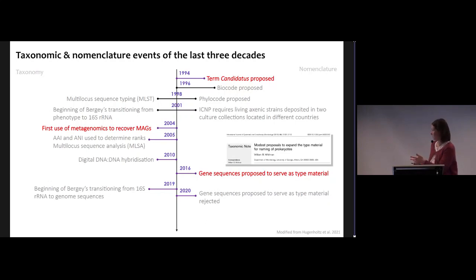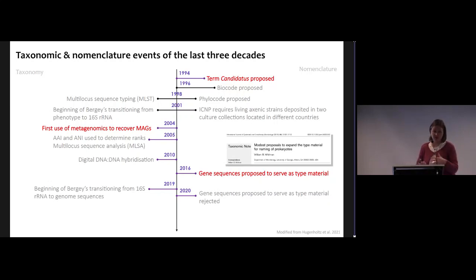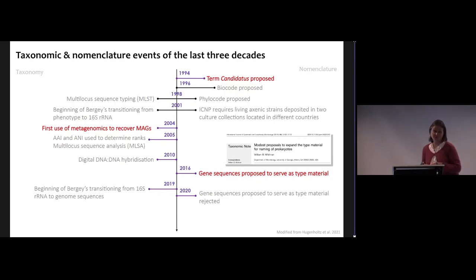We saw a transition in prokaryotic nomenclature from phenotypic taxonomy towards genome-based taxonomy. At the same time, after the Candidatus term was proposed, there was discussion about a BioCode — people realized there were five different codes of nomenclature and perhaps they could be unified. Unfortunately that didn't happen. In 1998, the PhyloCode was proposed, which is the concept of naming taxa based on phylogenetics groupings.